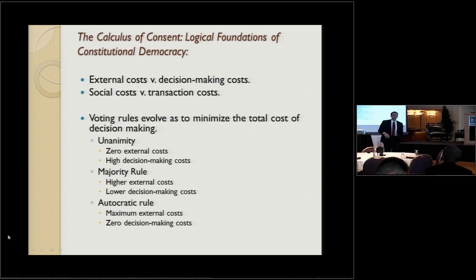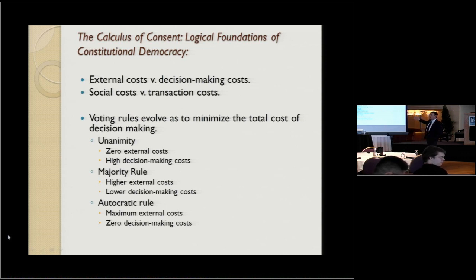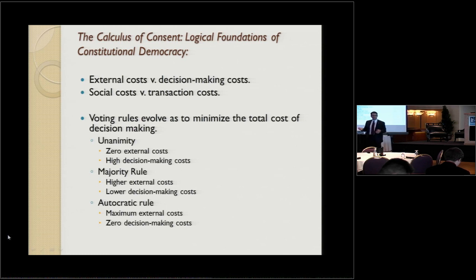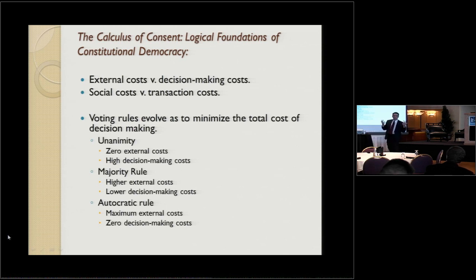Majority rule — the one that you guys all default to. Well, because somebody programmed you to it: that's the way it's always been done, that must be right. Well, it's not. Majority rule has higher external costs than unanimity — some people are always going to lose — but the decision-making costs are substantially lower. All we have to do is count people's preferences. You can also use majority rule as a plurality: if you have three choices, as long as one has more than the other two, it wins. So 34% of the people are happy and 66% are unhappy.